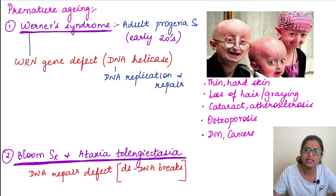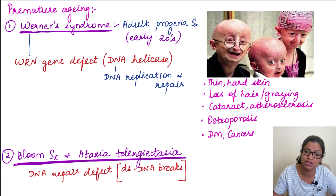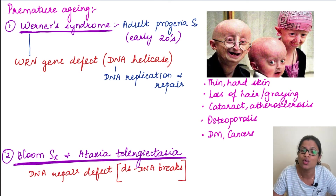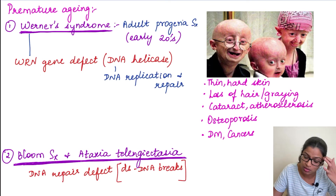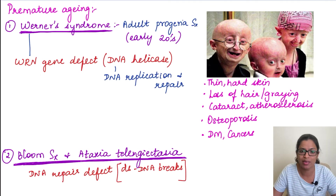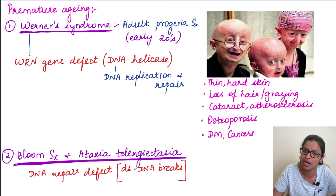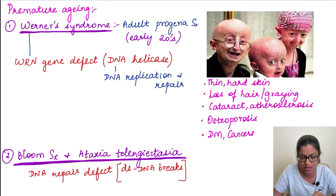There is a condition called premature aging, where the patient is not elderly but has undergone aging at a very young age. Why? Because there is a defect in their DNA repair mechanism. The DNA damage which has happened is not going to get repaired. This accumulated DNA damage is going to continuously happen and will result in the cellular aging of these patients.